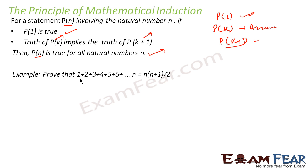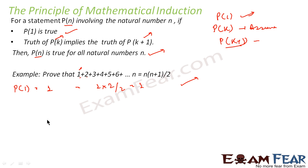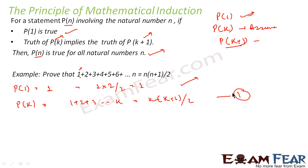Let's take an example. We have to prove that 1 plus 2 plus 3 plus ... plus n equals n(n+1)/2. For n equals 1, the LHS equals 1, and the RHS equals 1 times (1+1)/2 equals 2/2 equals 1. So the statement is true for p(1). Now let's assume p(k) is true, meaning 1 plus 2 plus 3 plus ... plus k equals k(k+1)/2. We take this as equation 1.